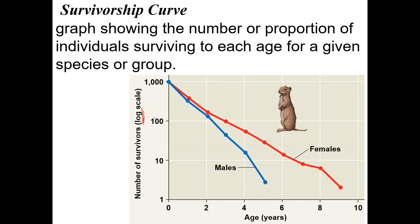An important feature of survivorship graphs is the log scale on the y-axis. A regular scale might go 0, 10, 20, 30, but a log scale adds an order of magnitude each time — so 10, 100, 1000, each ten times bigger than the last. The x-axis is age in years. You might start with 1,000 individuals born, and by age one, many have died. Male versus female survival is similar early on, but by age five there are noticeably fewer males than females.